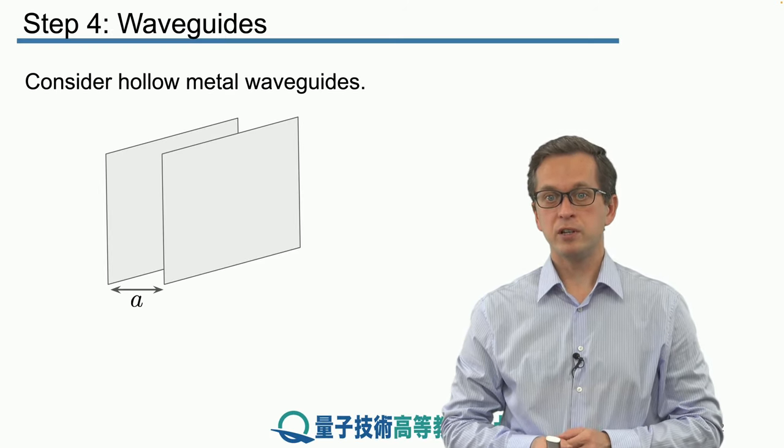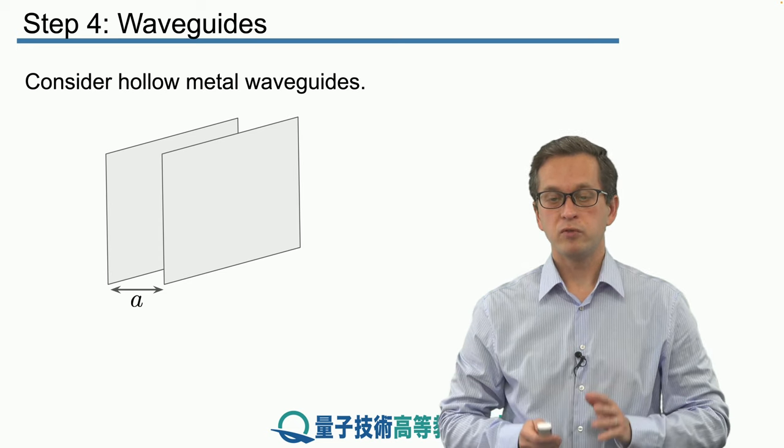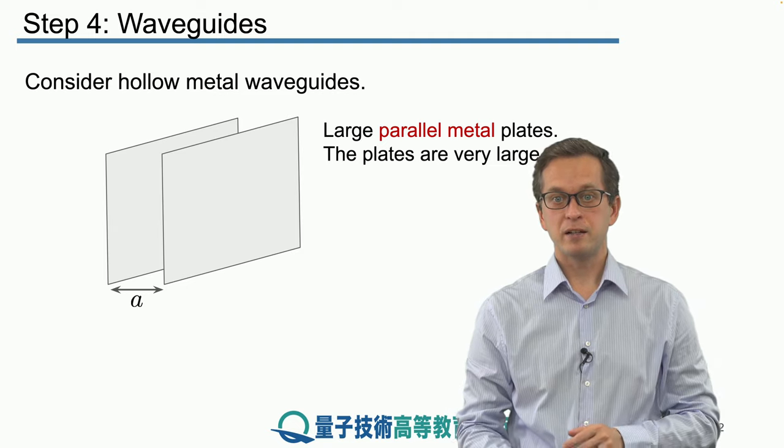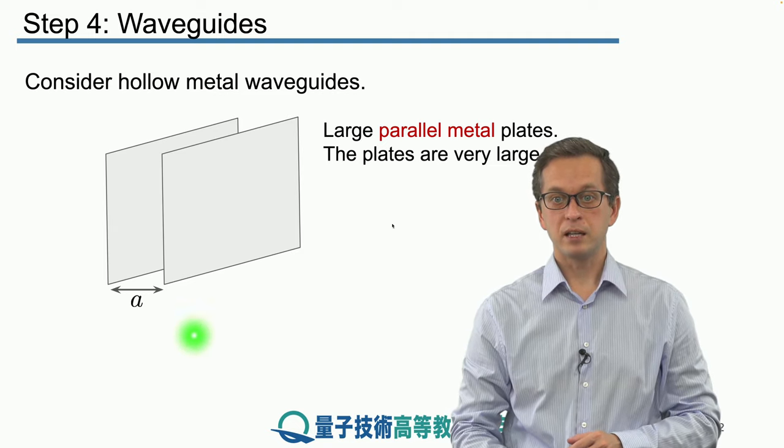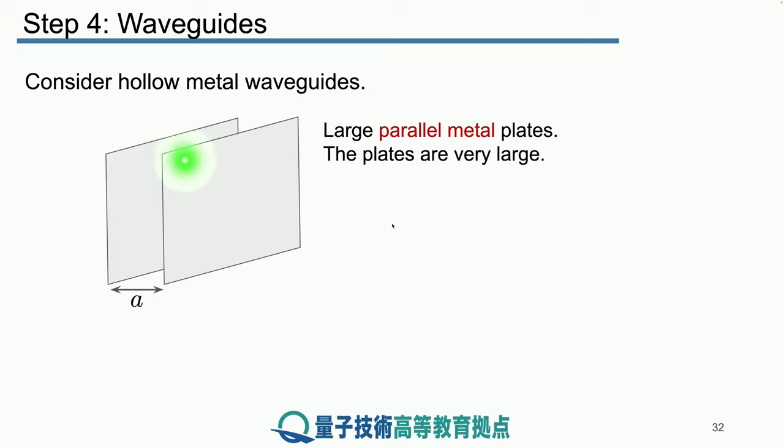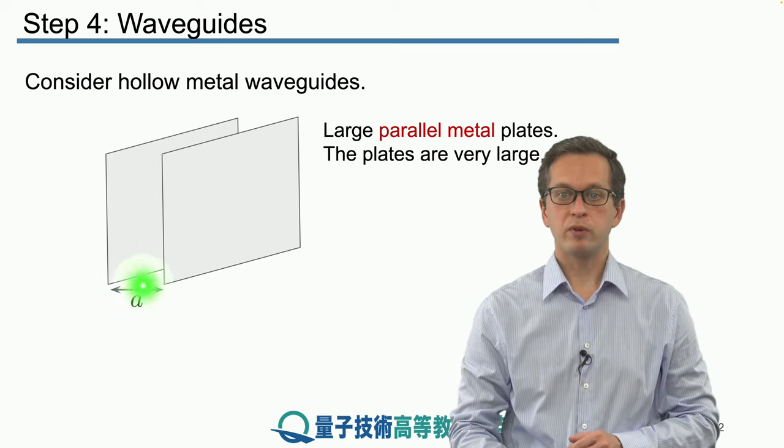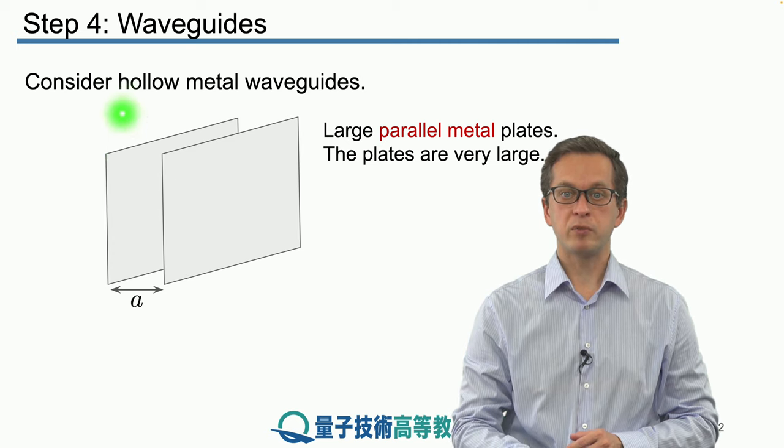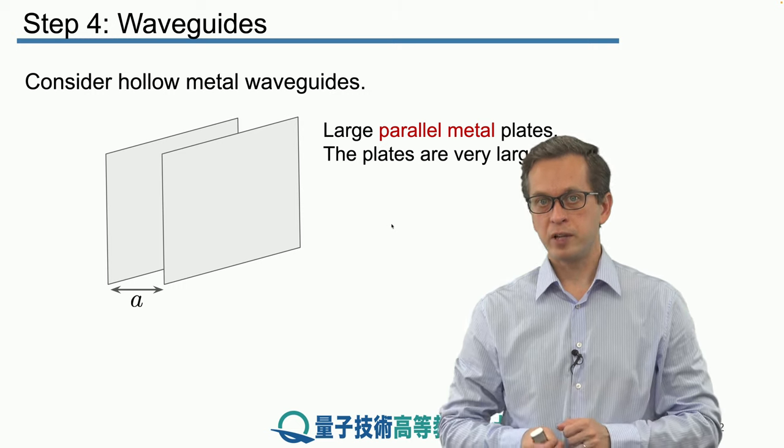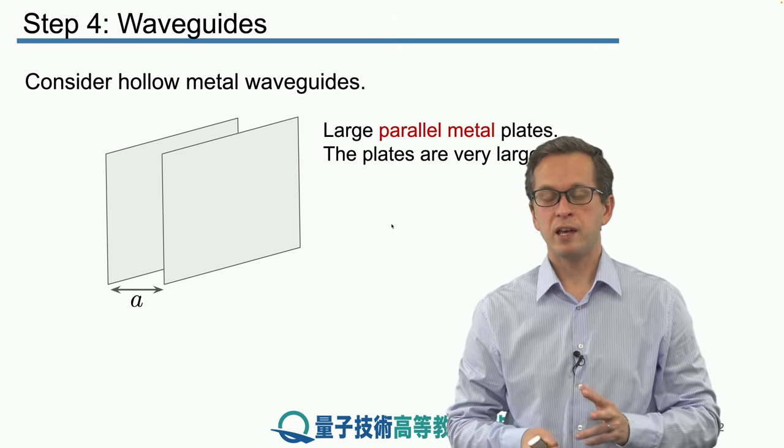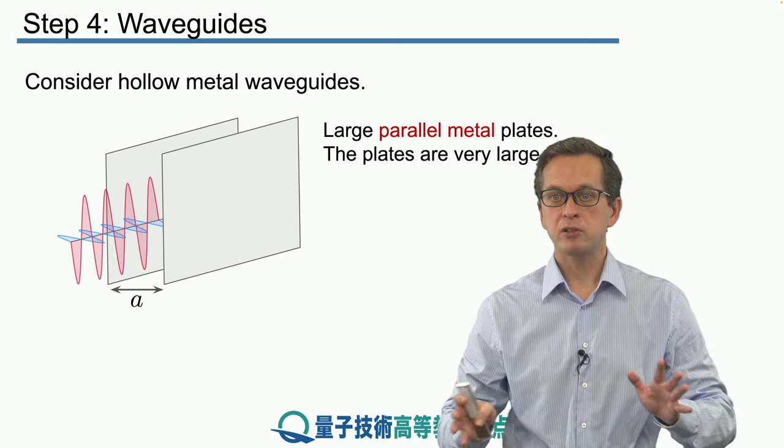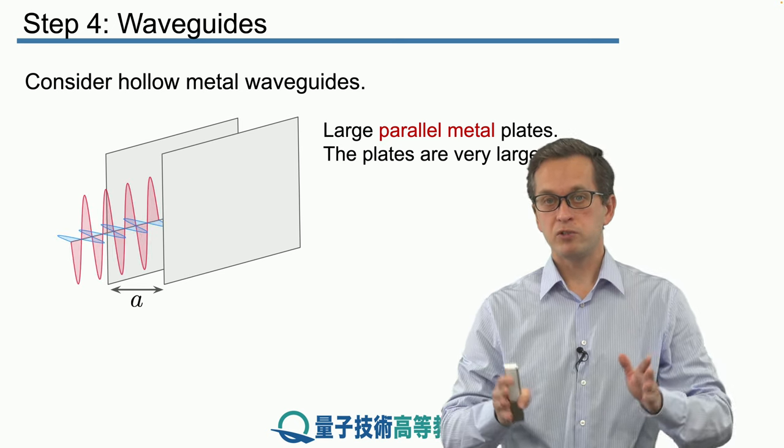The scenario that we are considering is the following. We've got two very large metal plates that are in parallel. They are separated by some distance a. We could also consider a closed metal waveguide where we introduce some metal walls over here, and then also this separation would play a role. But that would slightly complicate the mathematics without revealing any new physics. So we're going to consider only very large metal waveguides, constrained only in one direction.